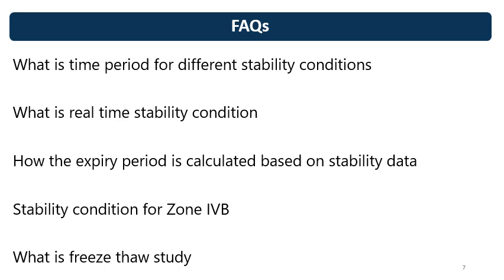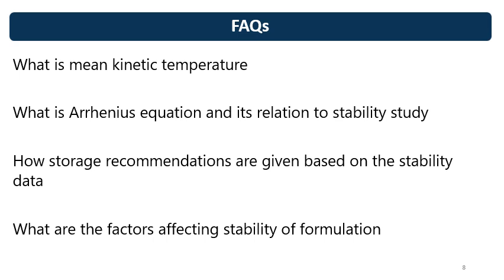What is real-time stability condition or real-time stability study? How is the expiry period calculated based on stability data? This relates to evaluation and extrapolation of the stability period. What are the stability conditions for zone 4B? For zone 4B, 30°C and 75% RH is the long-term condition. What is a Freeze-thaw study? It is generally performed for liquid formulations to study the impact of sudden change in temperature. What is mean kinetic temperature and how is it calculated? What is the role of mean kinetic temperature? What is the Arrhenius equation and its relation to stability study?